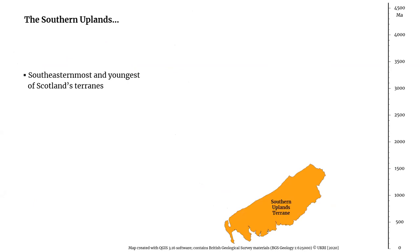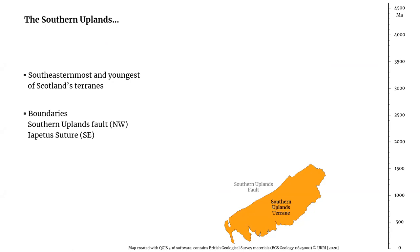The Southern Uplands is the southernmost and also the youngest of Scotland's terrains, and is separated from the rest of Scotland by the Southern Uplands fault. Its southeastern geological limit is given by the Iapetus suture, a line that marks the final closure of the Iapetus Ocean. However, because this line is located in the north of England, not far from the border between the two countries, and is mostly buried under recent sediments, what we see on the map as the southeastern limit is an administrative limit — the boundary between Scotland and England.